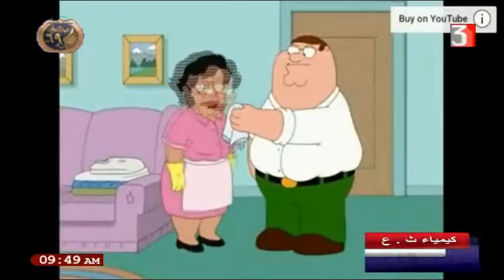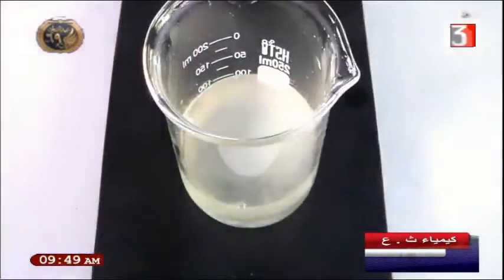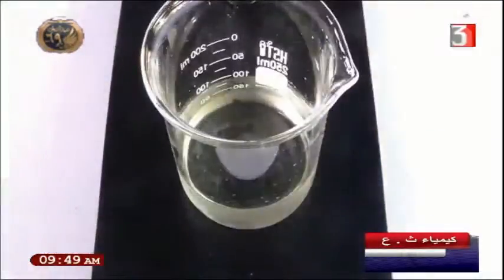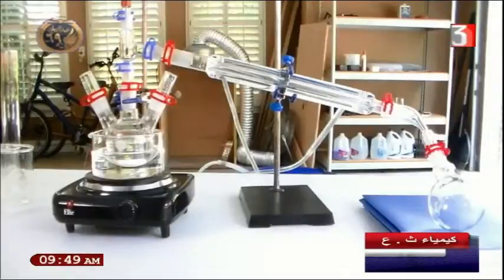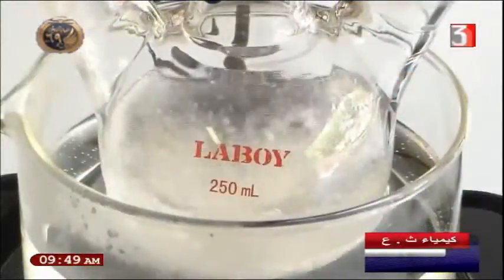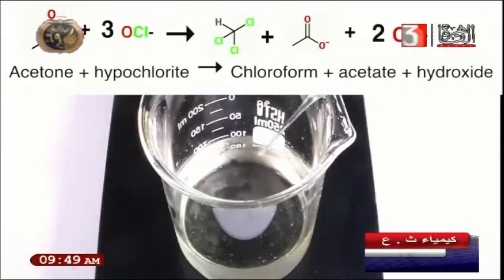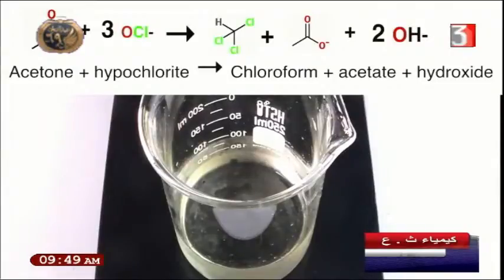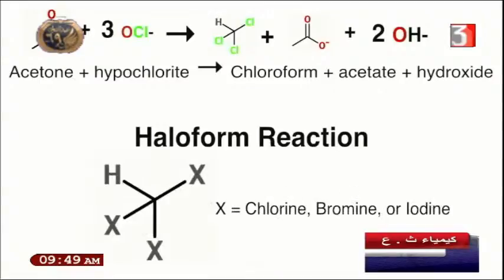Chloroform is toxic — inhaling it causes unconsciousness, which represents a dangerous misuse. In the lab, chloroform can be prepared via the haloform reaction: acetone plus sodium hypochlorite gives chloroform acetate plus hydroxide. The haloform reaction is the safer preparation method. In this reaction, X represents chlorine, bromine, or iodine.